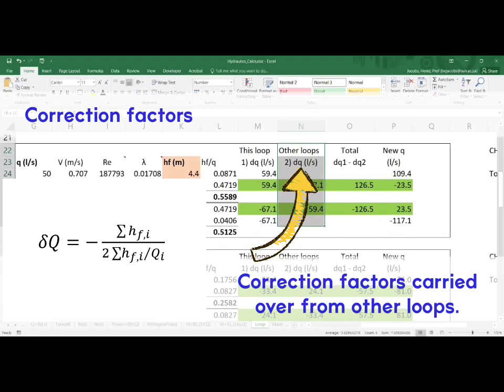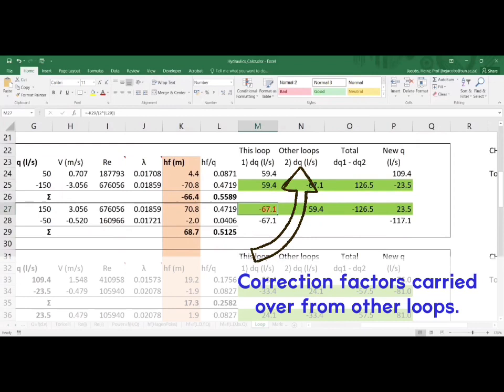After calculating the correction factor, we go and cross over correction factors from other loops for all shared pipes.